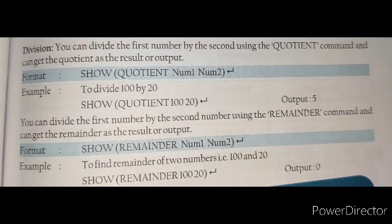Last is the division command. You can divide the first number by the second using the QUOTIENT command to get the quotient as output. The format is SHOW (QUOTIENT NUMBER1 NUMBER2), then press Enter. For the remainder, use SHOW (REMAINDER NUMBER1 NUMBER2), then press Enter. Whenever you need the quotient, use the QUOTIENT format; to find the remainder, use the REMAINDER format.